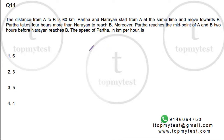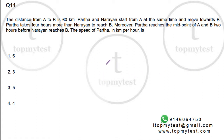There's a question from CAT 2018 Slot 1 on time and distance. It's an easy question — you can actually solve it using options. All you need is to be a little careful with the basics of time and distance. Let's see what this is. The distance from A to B is 60 kilometers.